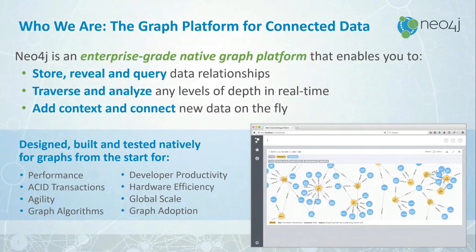Let's begin with a discussion about who Neo4j is and what we have been doing. We are the graph platform, and we focus on connected data — the relationships amongst different data entities. We're an enterprise-grade native platform that allows you to not only store but reveal, query, and use data relationships in your applications and infrastructure. We allow you to both traverse and analyze this connectedness at any level of depth, and it all happens in real time. Sometimes the six degrees of separation between one data element and another isn't far enough — perhaps you have to go 20 degrees away to really gain that context.